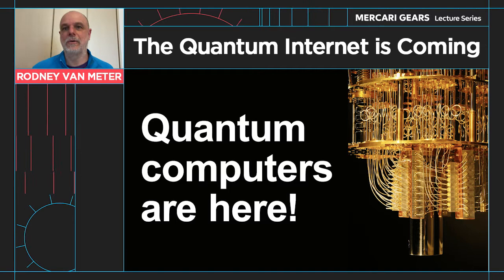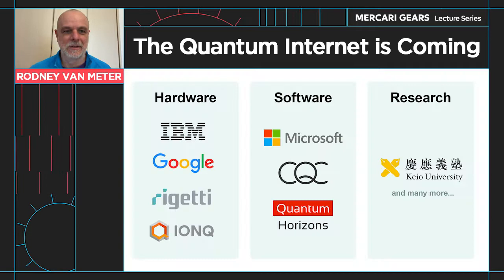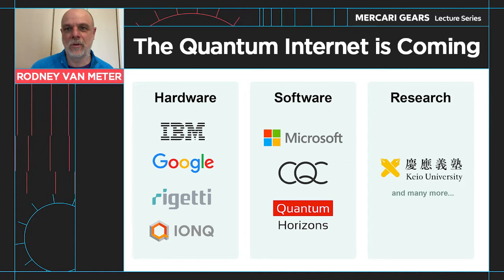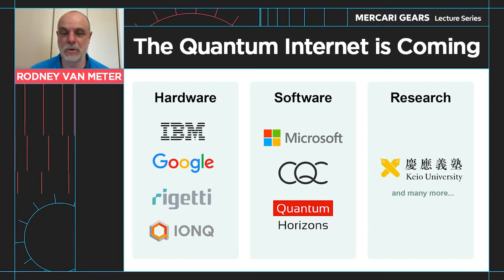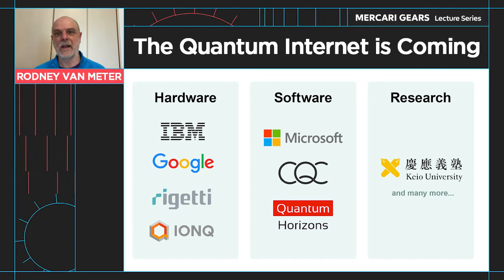The first thing I want to say is that quantum computers are here. You can actually use them today — they're real. There are companies like IBM and Google and Rigetti and IonQ that are out there making real quantum computers, and they're going to solve a lot of important problems for us as a society.